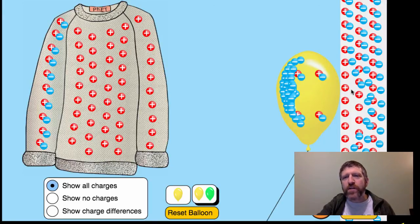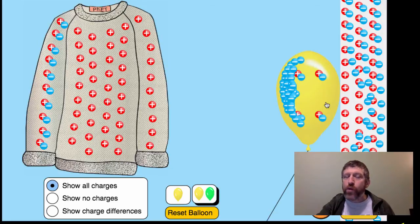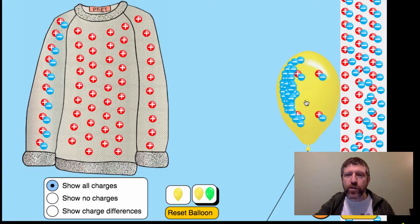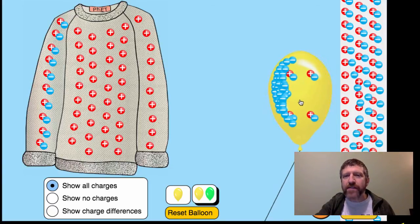This leaves the positive charges closer to the balloon. And just this small difference in distance, it's a 1 over R squared law, makes the positive charges win because they are closer to the balloon. So this attracts.